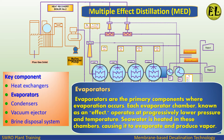Evaporators: Evaporators are the primary components where evaporation occurs. Each evaporator chamber, known as an effect, operates at progressively lower pressure and temperature. Seawater is heated in these chambers, causing it to evaporate and produce vapor.